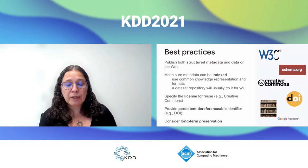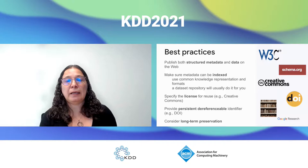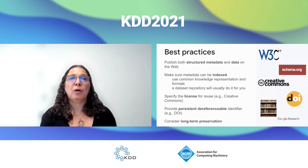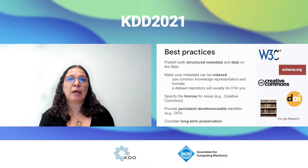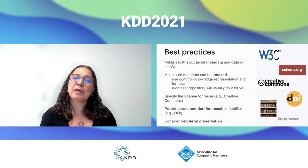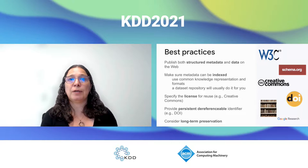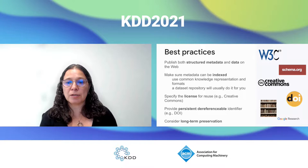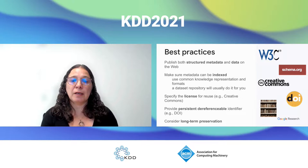One final point is considering long-term preservation. If we think about data the same way we think about archival publications, we need to think about what will happen to the data I created as a graduate student when I graduate, or when I leave a company, or move to another university or retire. Repositories like Figshare have thought about this. Libraries have thought a lot about it. Thinking about data publication in the context of what we've learned from libraries and archival publications is useful if we want to treat data as being as valuable as our papers.